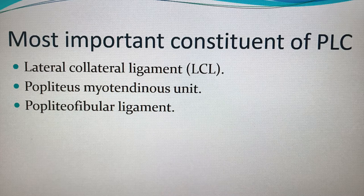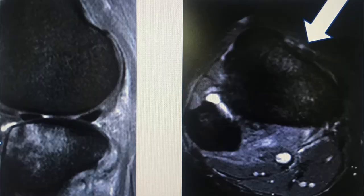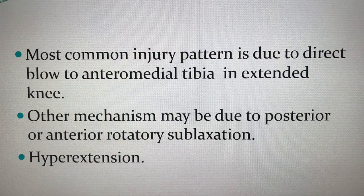After discussing the anatomy of the posterolateral corner, now I'm going to discuss the injuries of the posterolateral corner. The most common pattern of injury is due to a direct blow to the anteromedial tibia in the extended position of the knee, which creates a lateral force that will gap open the lateral side of the knee, resulting in injury of the posterolateral corner structures. Other mechanisms may be due to rotatory subluxation or hyperextension.